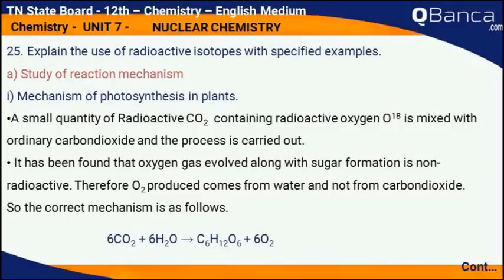Explain the use of radioactive isotopes with specified examples. Study of Reaction Mechanism: Mechanism of Photosynthesis in Plants. A small quantity of radioactive CO2 containing radioactive oxygen O18 is mixed with ordinary carbon dioxide and the process is carried out. It has been found that oxygen gas evolved along with sugar formation is non-radioactive. Therefore, O2 produced comes from water and not from carbon dioxide.